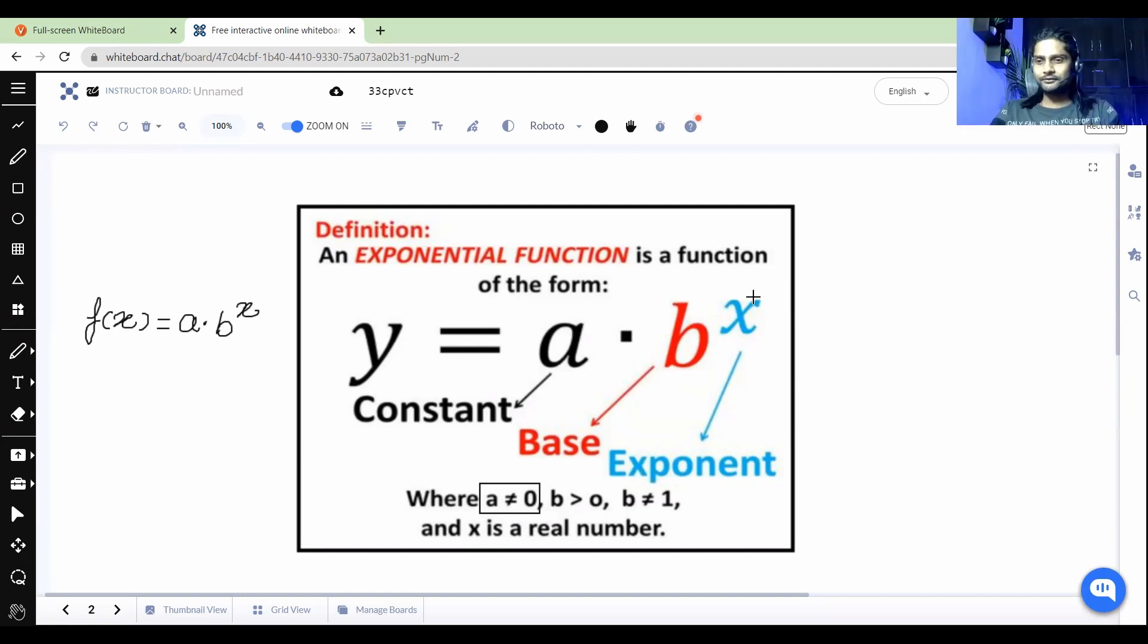And then y = 0 is a kind of a straight line, you must be knowing, right? It's the x-axis. Very good.